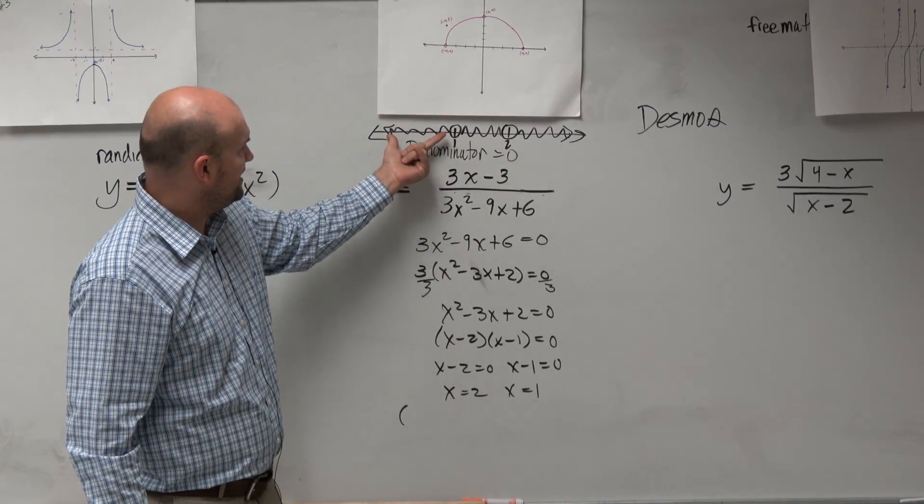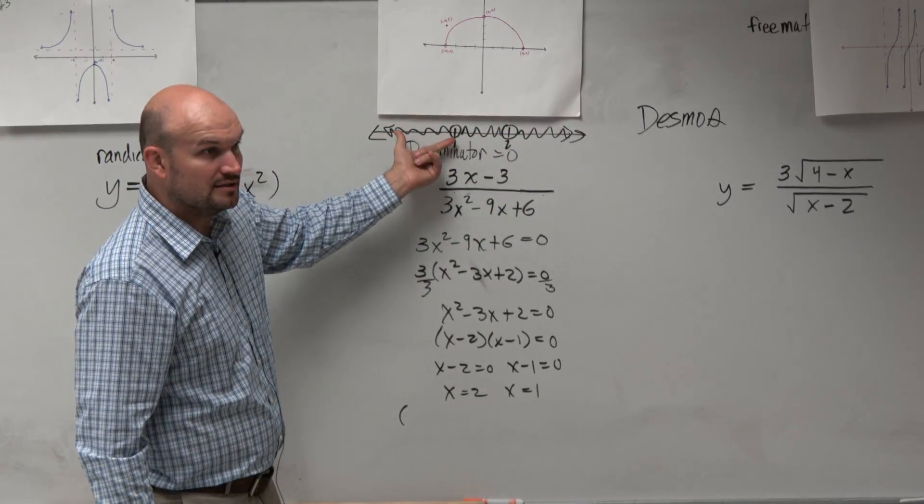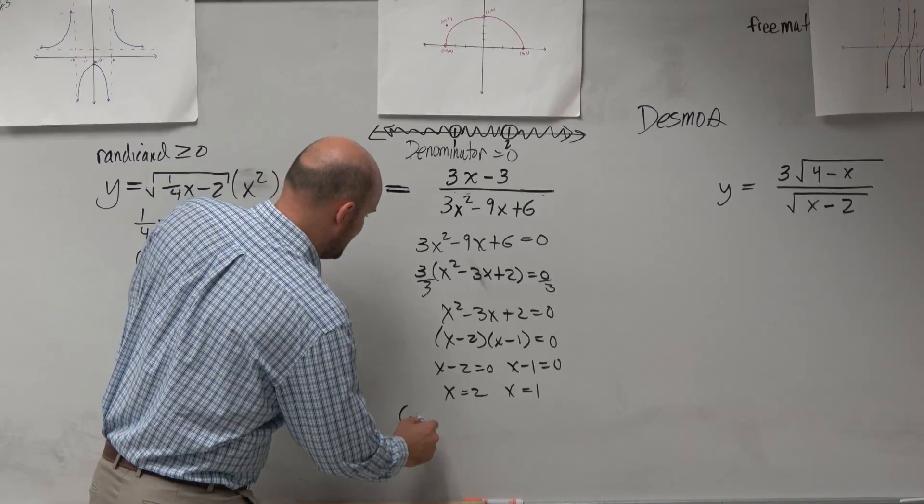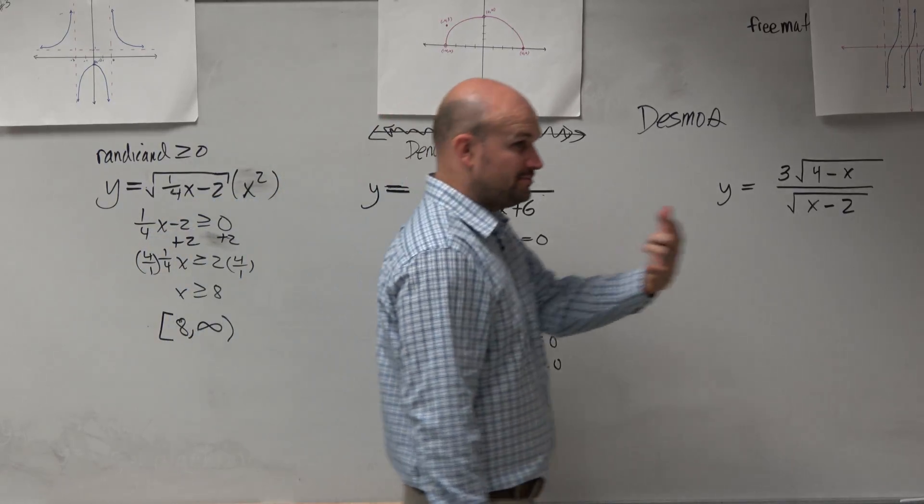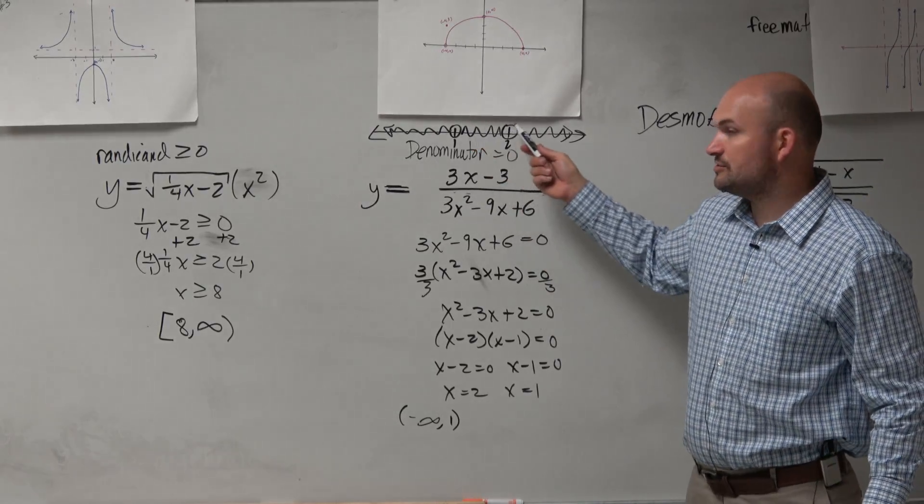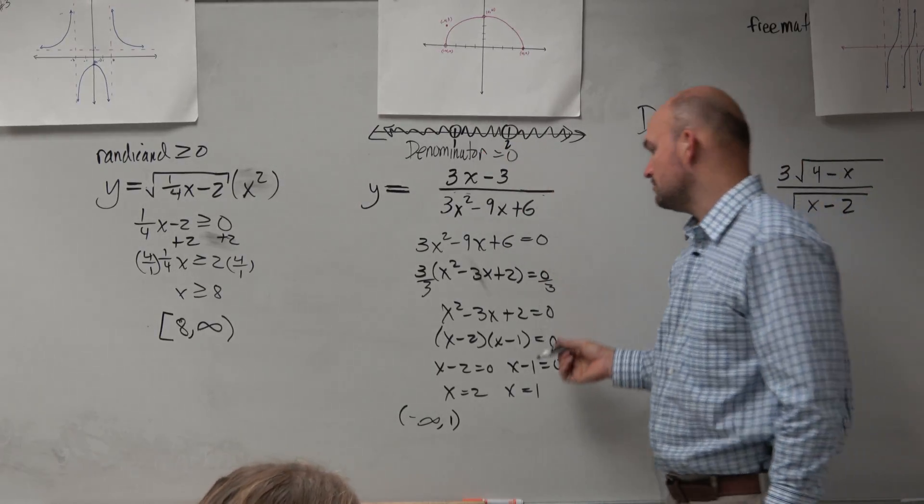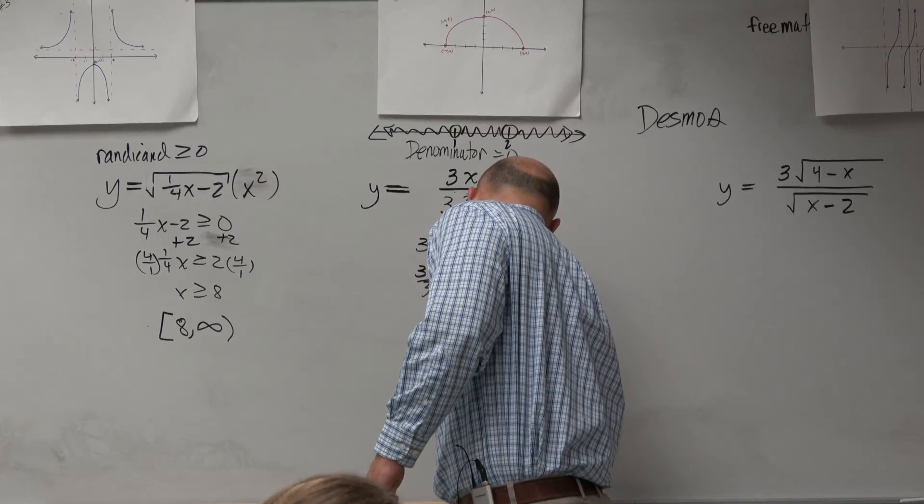Can we write the domain from negative infinity to here? Right, yeah. So we just write negative infinity to positive 1. And again, we're using parentheses because we're using open circles. Then let's write the domain from here to here, 1 to 2. OK, so 1 to 2.